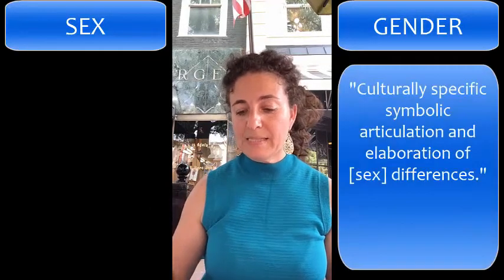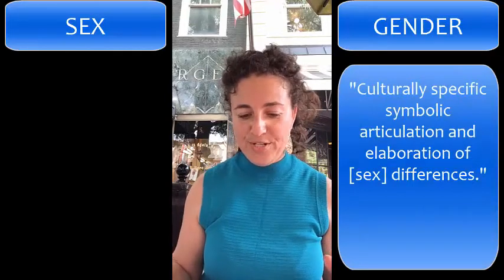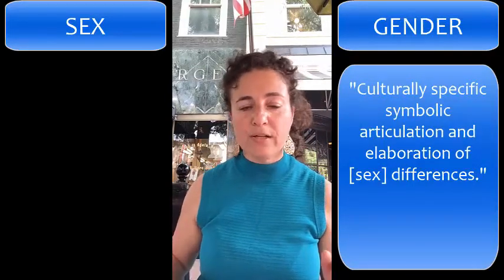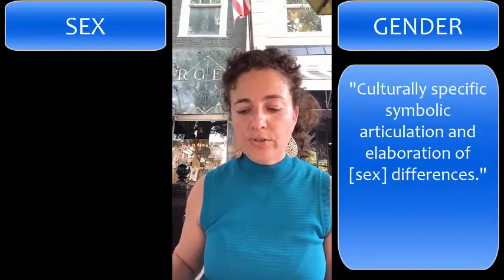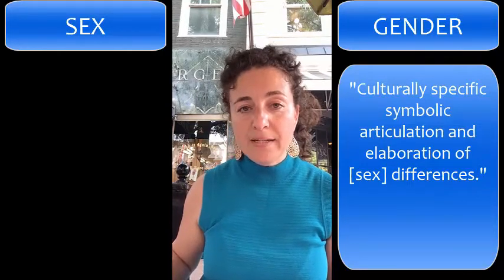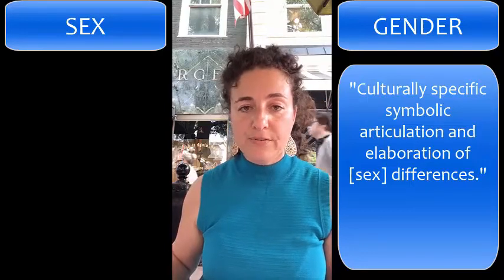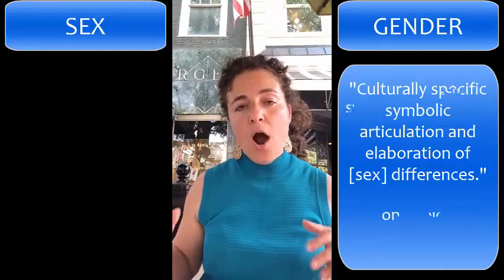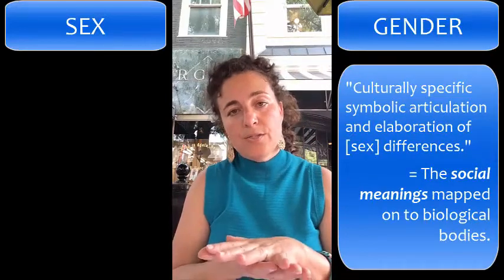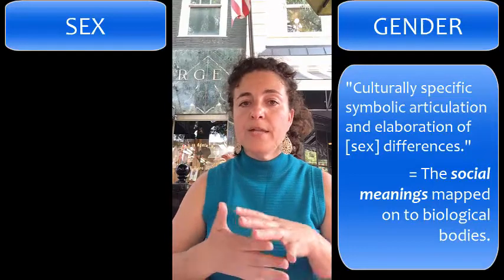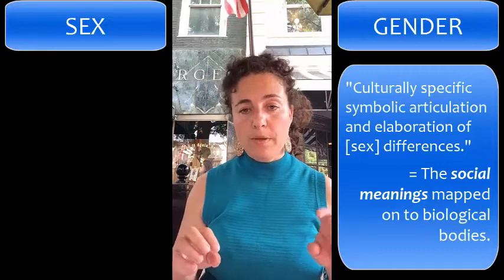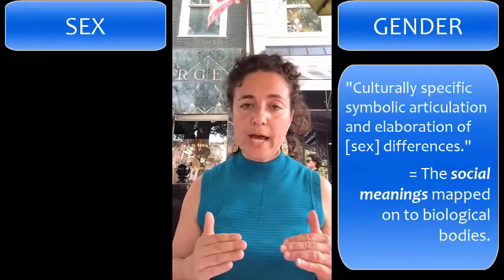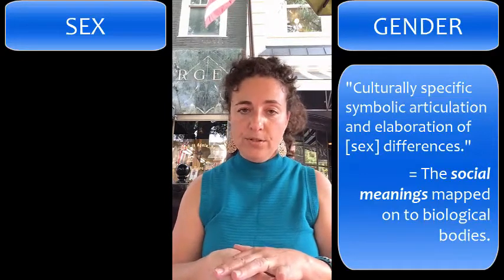Gender, on the other hand, is defined by the culturally specific symbolic articulation and elaboration of these differences. In other words, gender refers to the social meanings that we map onto biological bodies. In the United States, we generally recognize two genders, which we refer to as men and women, man and woman, boy and girl. Those are cultural categories, and they're mapped onto the physiological categories.